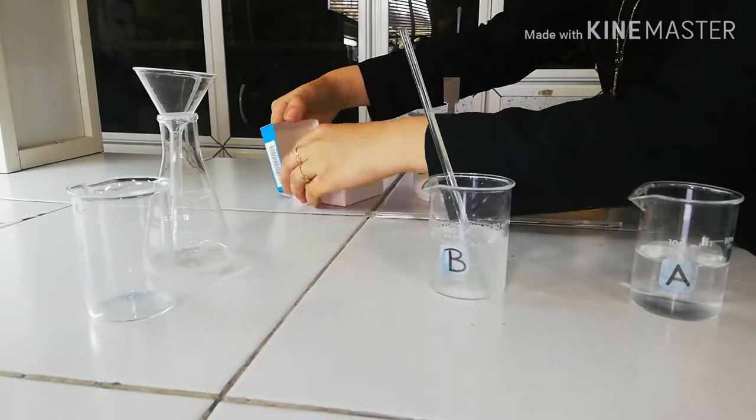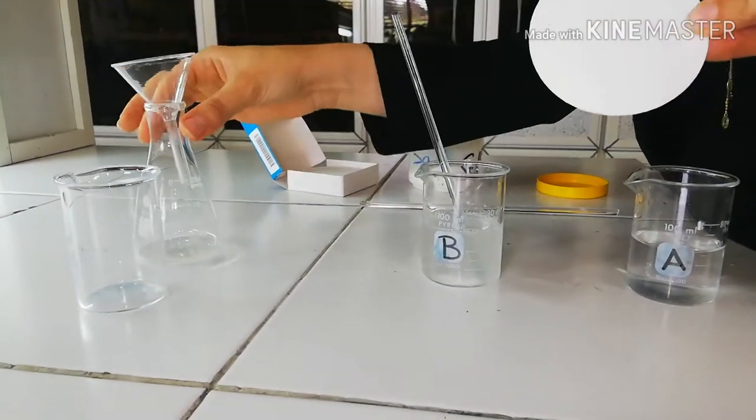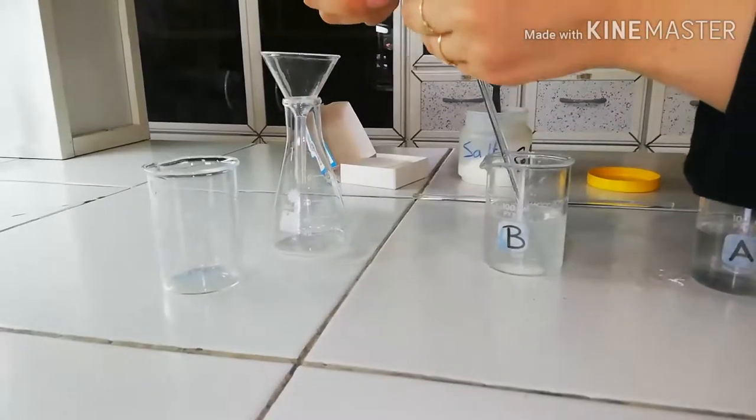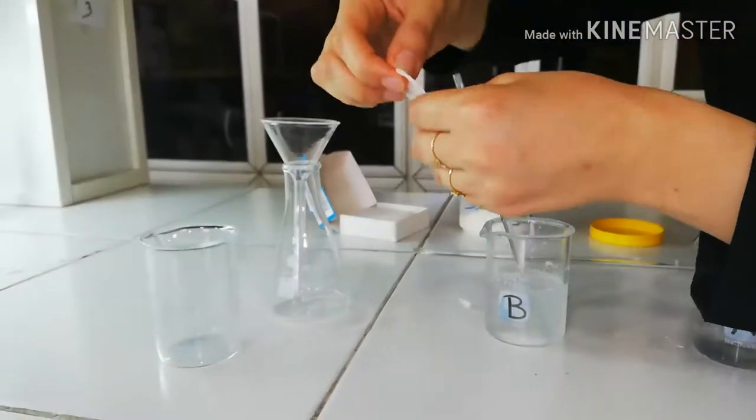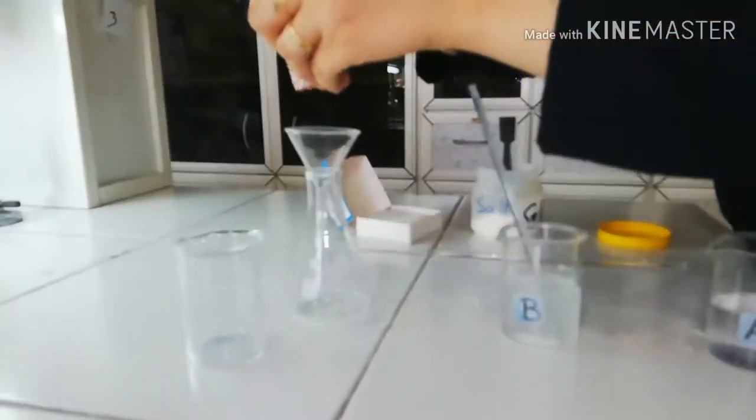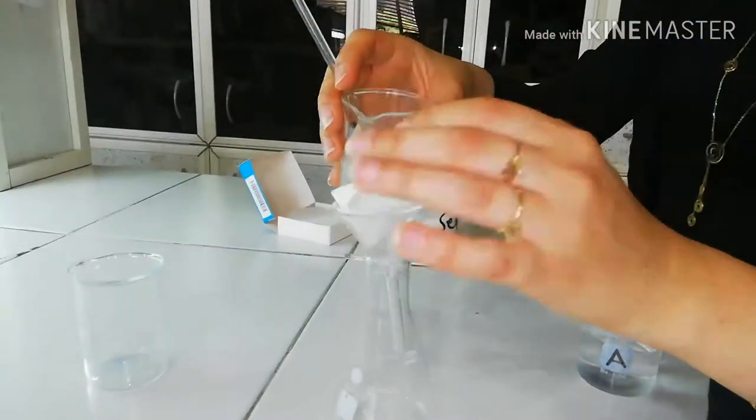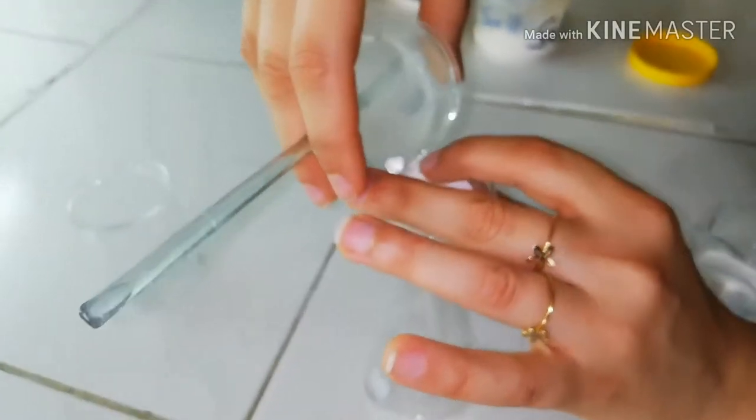You have to filter this heterogeneous mixture. For that, you need a filter paper, a funnel, and an Erlenmeyer flask. I'm going to fold the filter paper as follows. I'm going to put it right here into the funnel. And then I will pour the content, which is the heterogeneous mixture, right here.